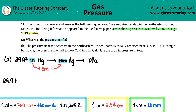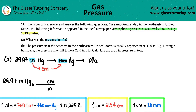Start with what you're given: 29.97 inches of mercury. Times by a ratio — put inches on the bottom and centimeters on top. One inch equals 2.54 centimeters, so the 1 goes with the inch and 2.54 centimeters goes on top. The inches cancel out and now we're left with centimeters of mercury, but we need millimeters — so one more conversion: centimeters on the bottom.